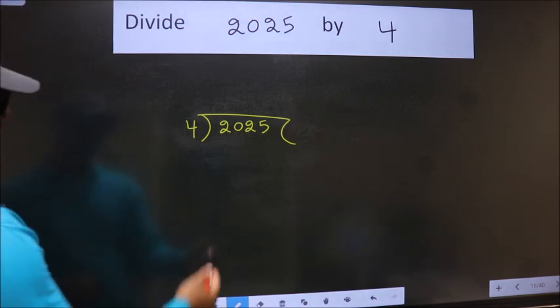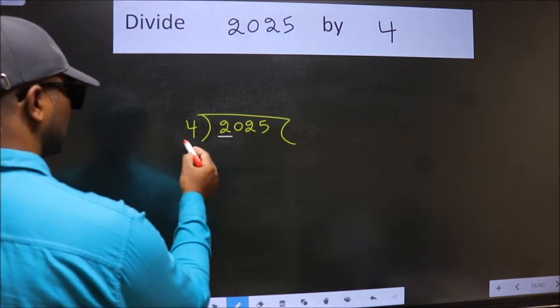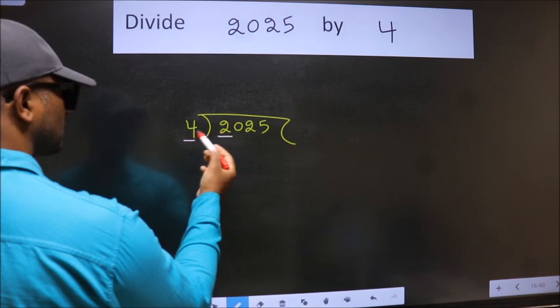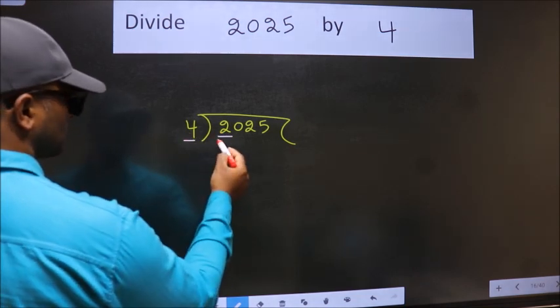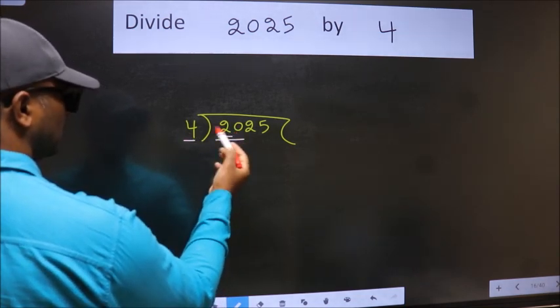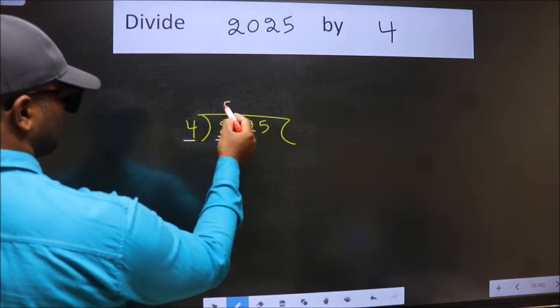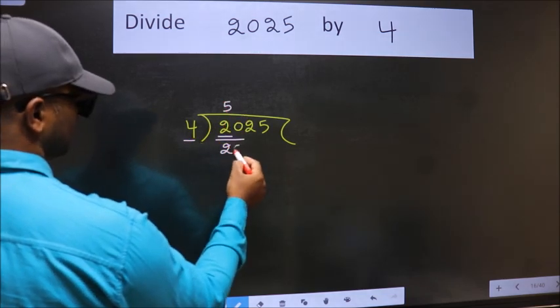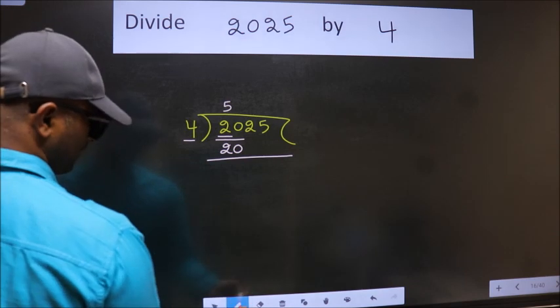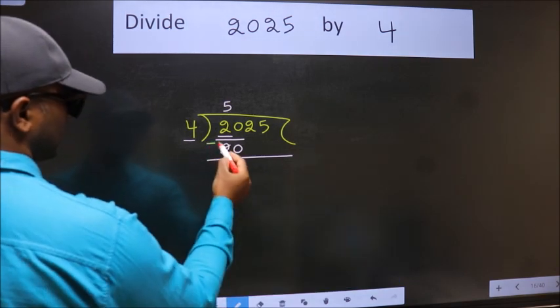Next, here we have 2, here 4. 2 is smaller than 4, so we should take 2 numbers: 20. When do we get 20 in 4 table? 4 fives 20. Now we should subtract. We get 0.